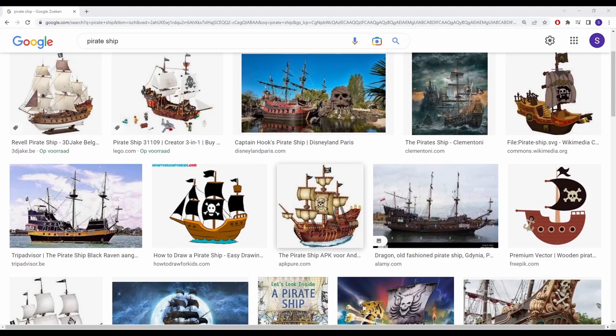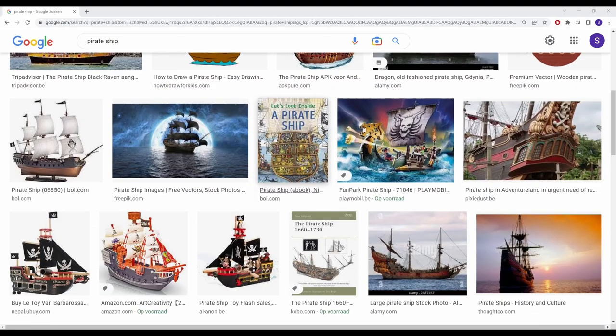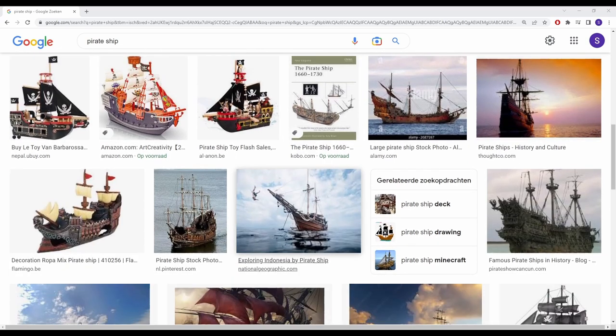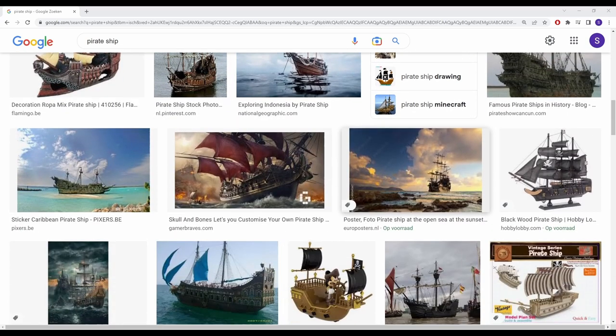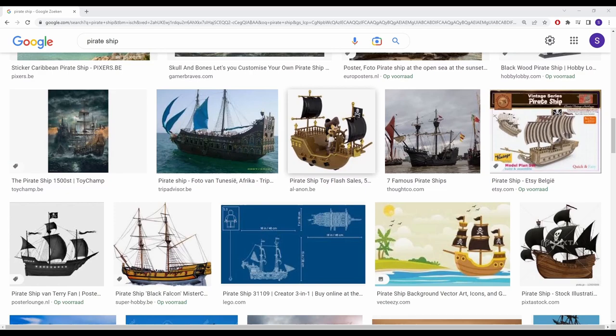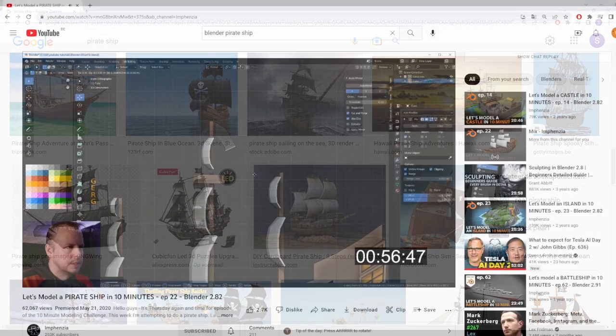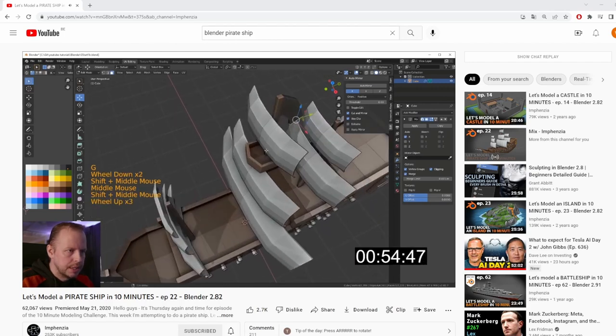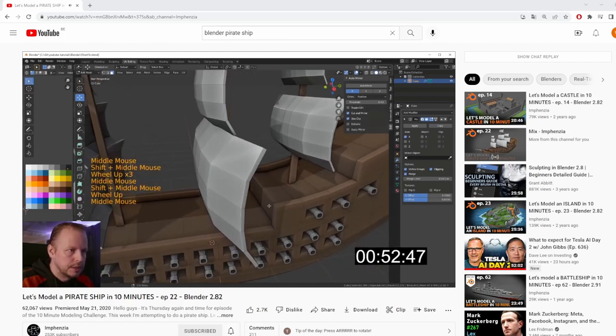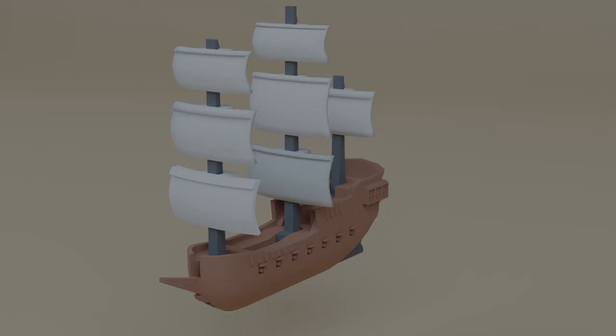So I started this project by looking up some images of pirate ships, just to get some reference pictures and to study the overall shape and proportions, the amount of sails and masts and so on. And I also watched this tutorial from Impensia on modeling a pirate ship in Blender. I then modeled my own ship and this is what it ended up looking like. I'm personally happy with the outcome.